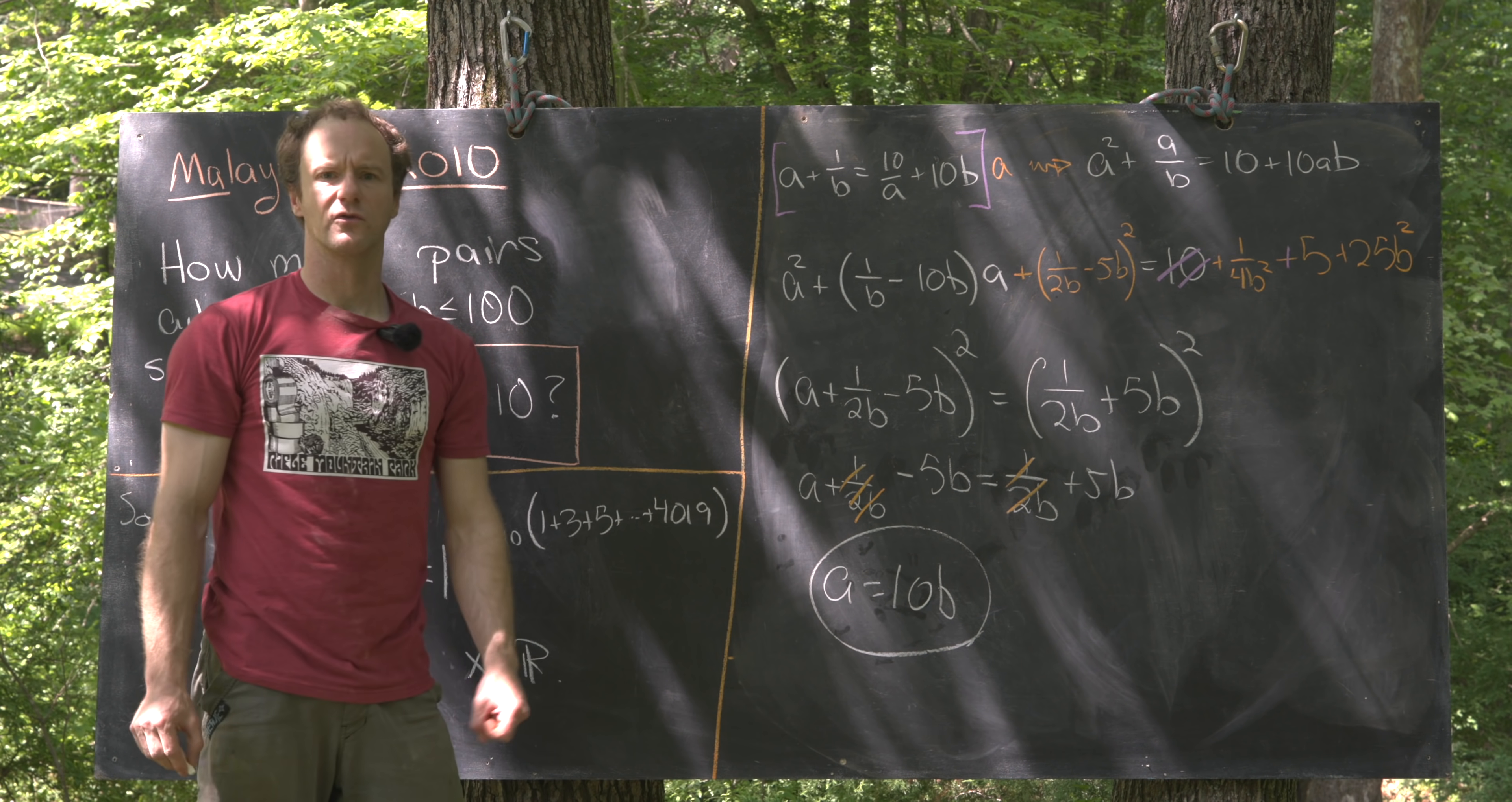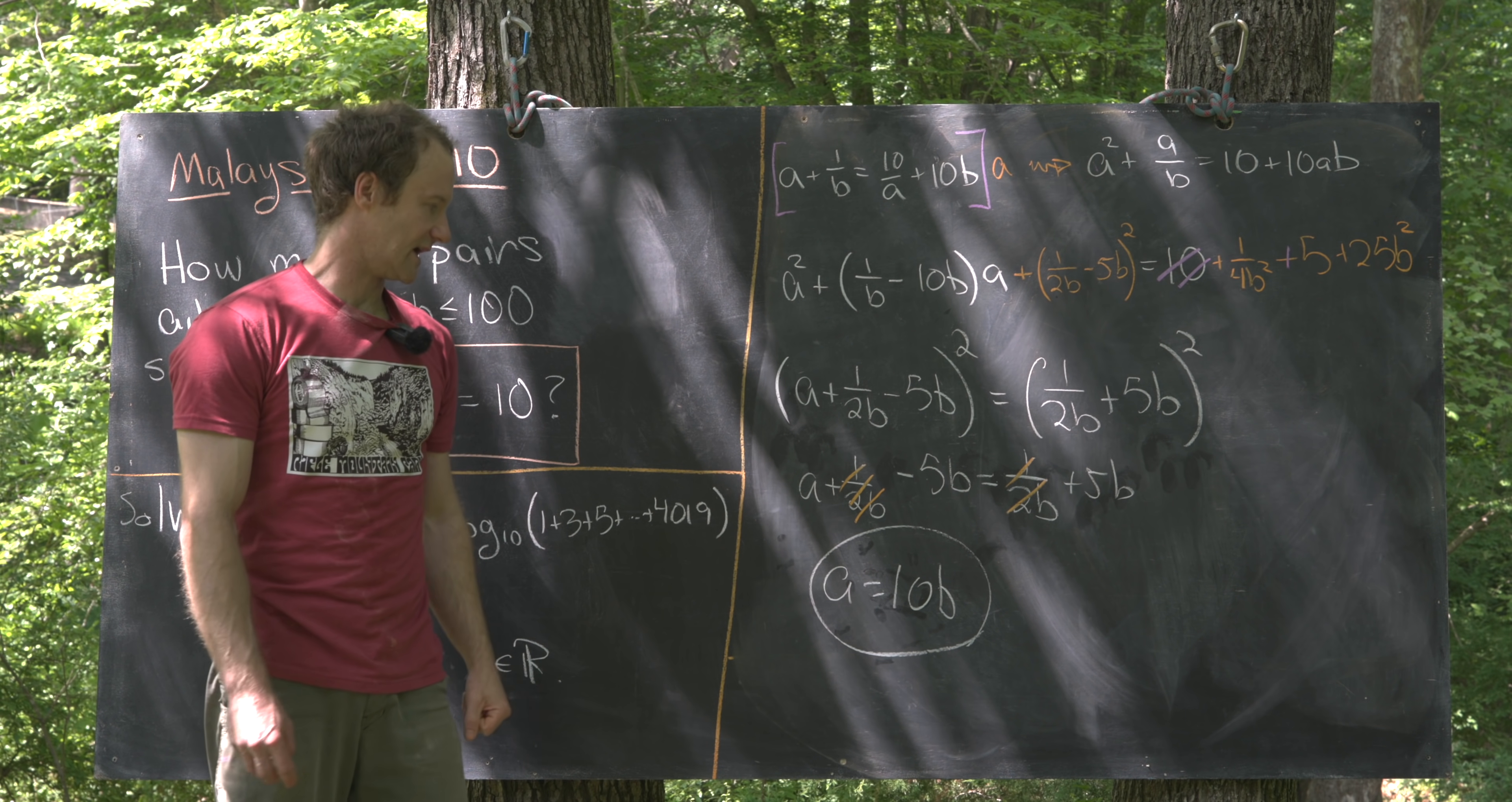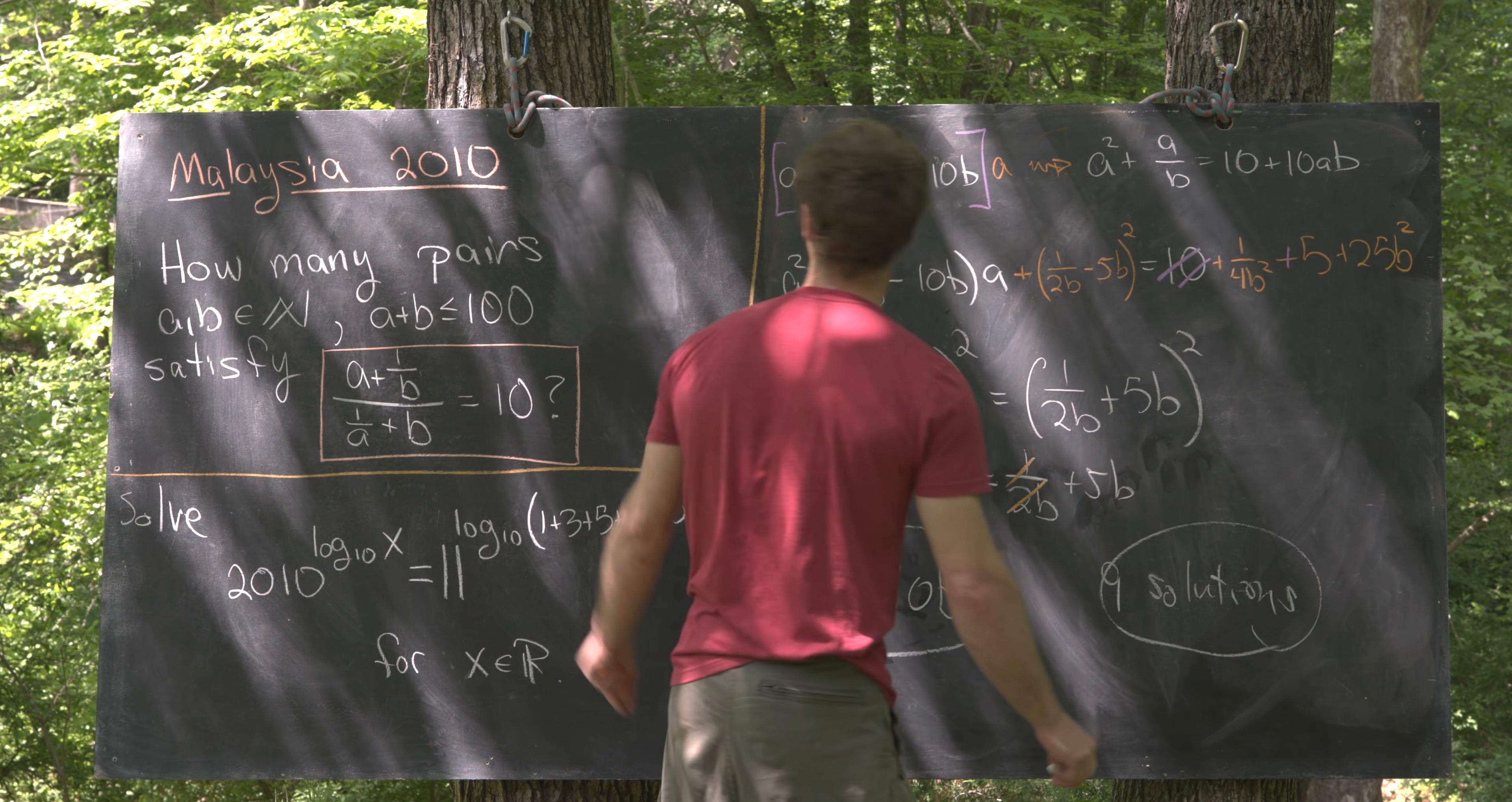Now we want to run through all of the possibilities for B that will let A plus B be less than or equal to 100. So let's see what possibilities we have. B can be equal to 1, then A is equal to 10, their sum is 11. B could be 2, 3, 4, all the way up to 9. If B is 9, then A is 90, 90 plus 9 is 99. But if B is anything outside of that range from 1 to 9, then it won't work. So that tells us that there are 9 total solutions satisfying the condition that was given.